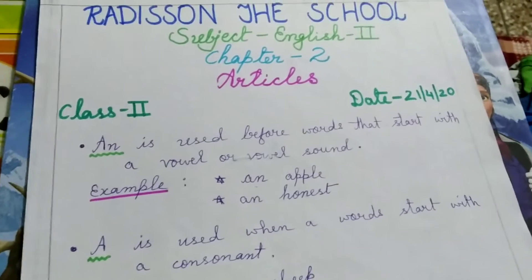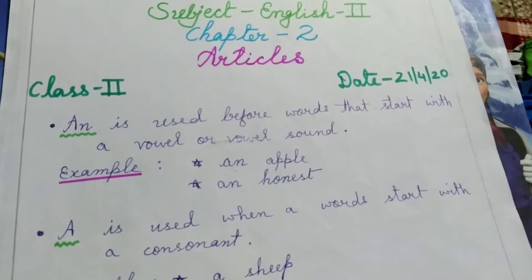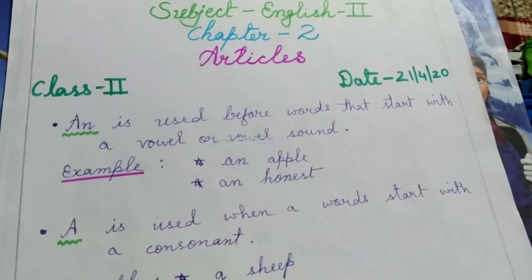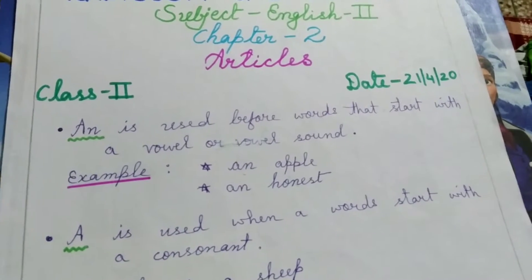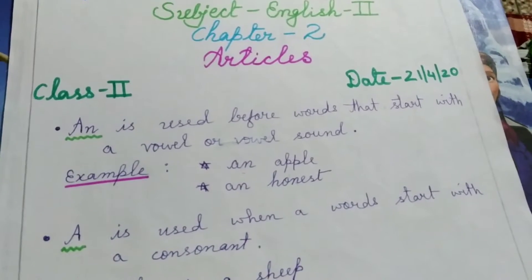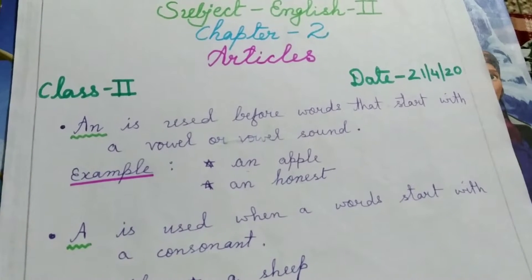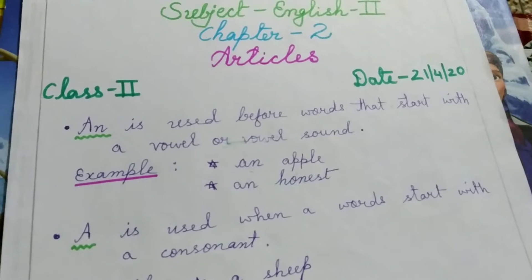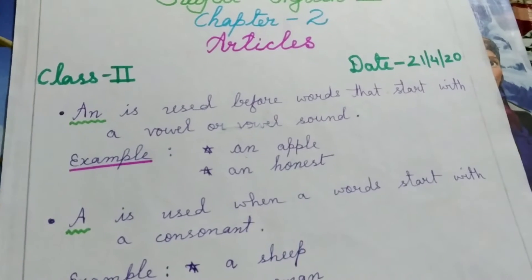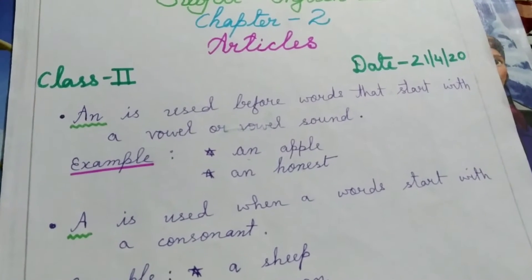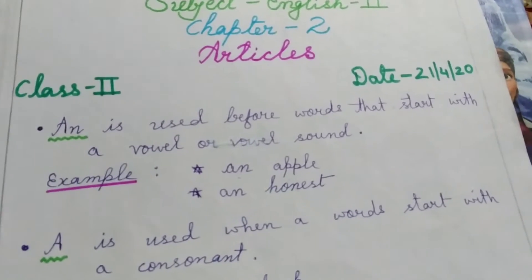Toh sib se pehle hum dekhenge AN. AN kahaan use hota hai? AN is used before words that start with a vowel or vowel sound. Hamare 5 vowels hotay hain: A, E, I, O, U. A, E, I, O, U se agar kohi noun start ho raha hai, toh uske aage AN likhte hain.